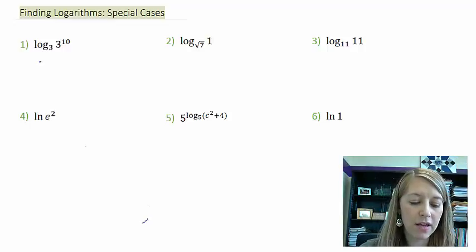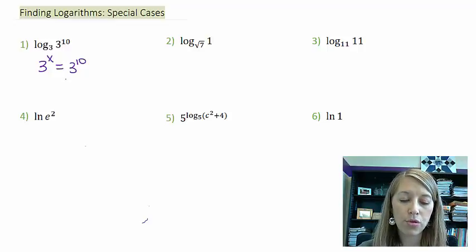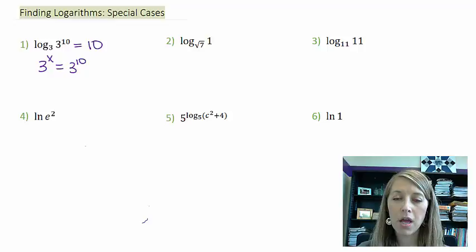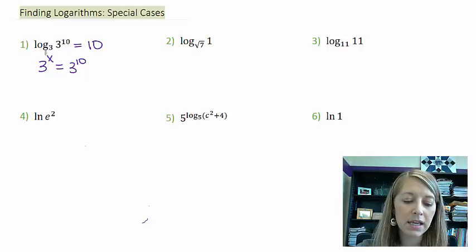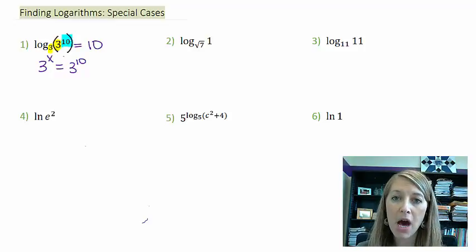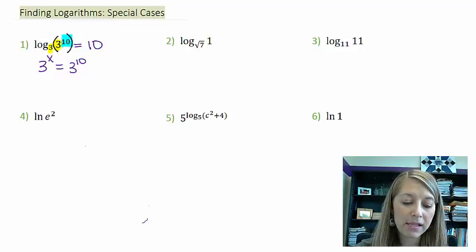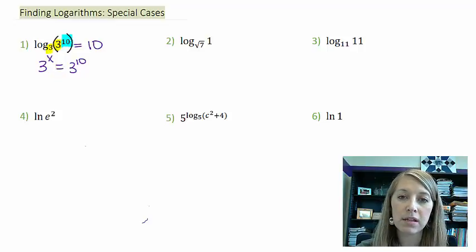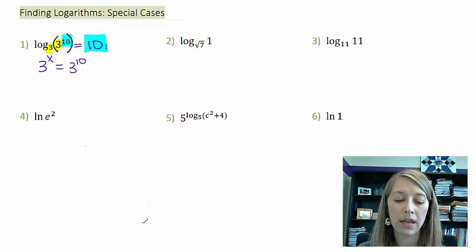Okay, in number one, I have three to what power is equal to three to the tenth? Well, my threes match up, so that means the power has got to be 10. My answer here is 10. The special case I'm hoping you notice here is that if our base and the base here match, what we're going to end up with is just our exponent. If we have a power in our argument and the base of that power matches the base of the log, they basically cancel out and we just end up with the power. That's the special case happening in number one.